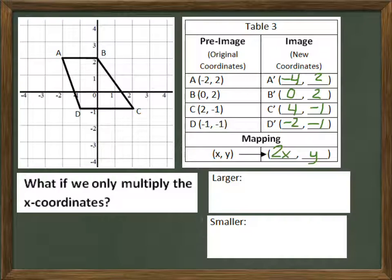So let's graph those and see what that looks like. We've got a prime, b prime, c prime, and d prime. Notice that b prime didn't change because 0 multiplied by 2 is still 0. So the point's still in the same place. That's what our new figure looks like.